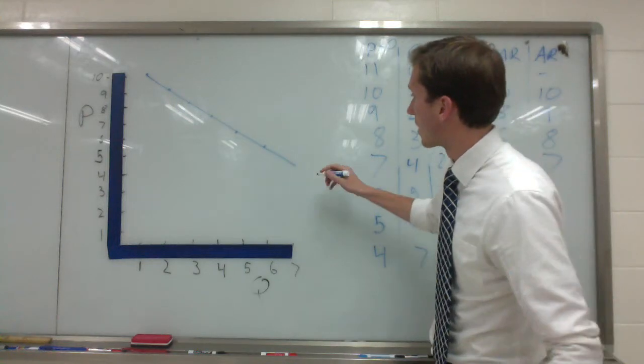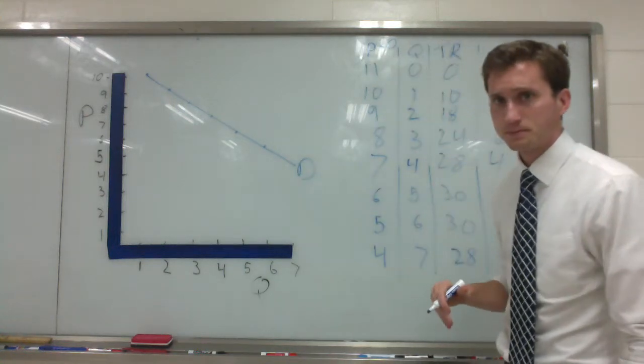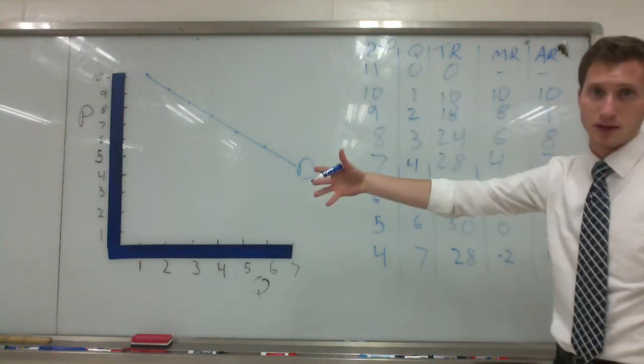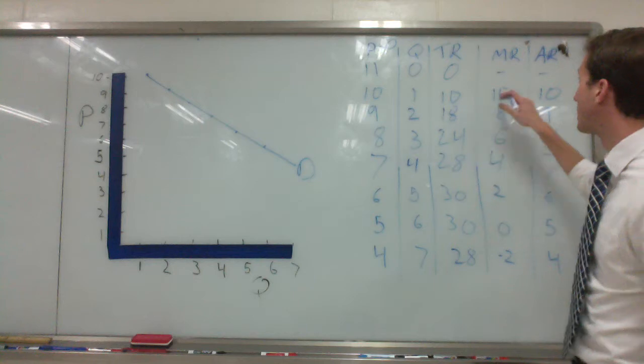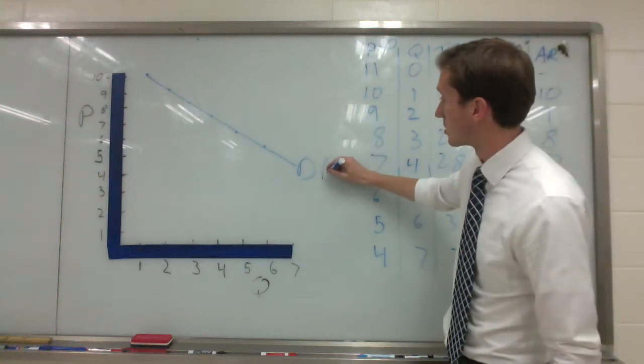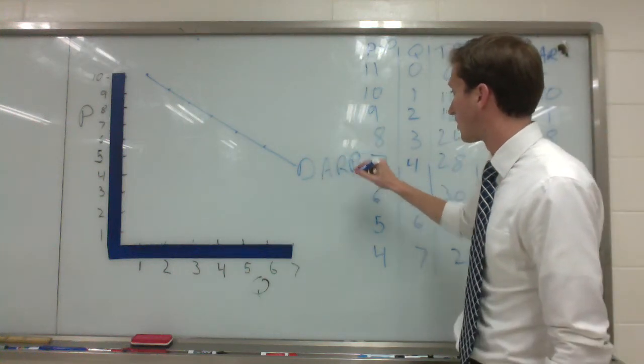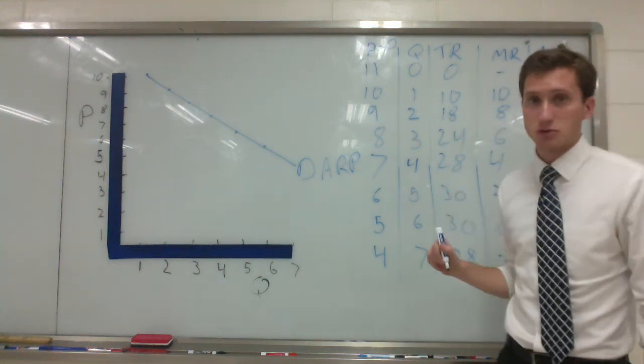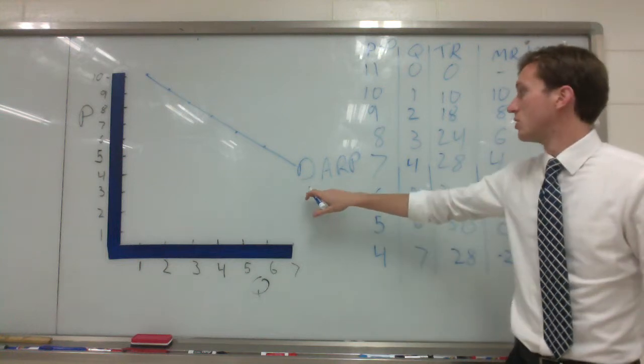So I don't have the demand curve at all kind of pictured out here, demand. Now we know demand is equal to the price, the demand consumers face, price and demand all the same. Also we have average revenue equal to this as well, due to the math of the total revenue divided by the quantity equals our average revenue, the same thing as the price. So we have DART.